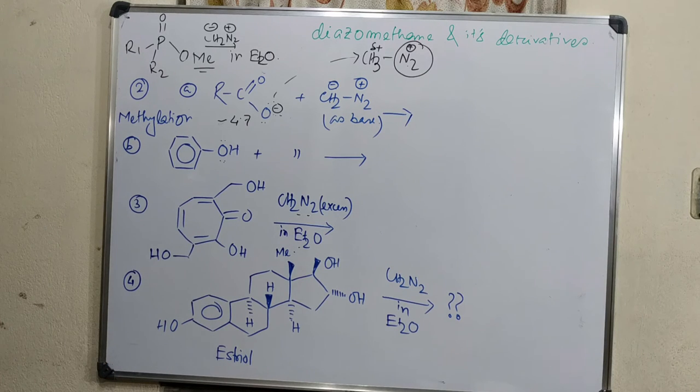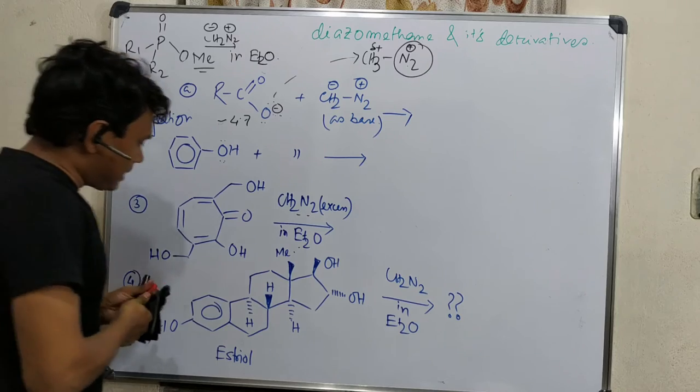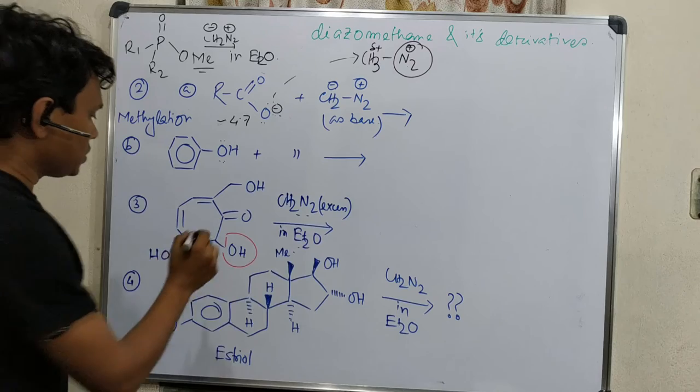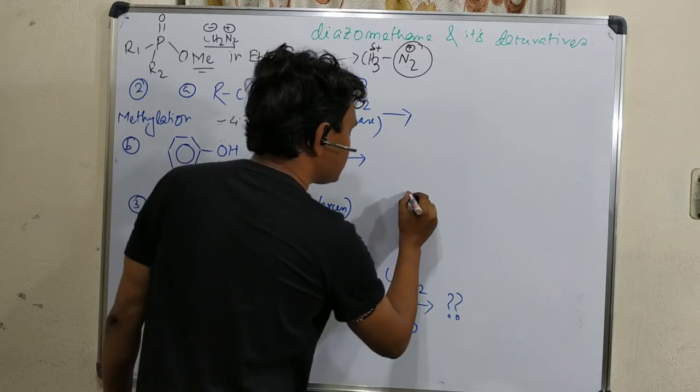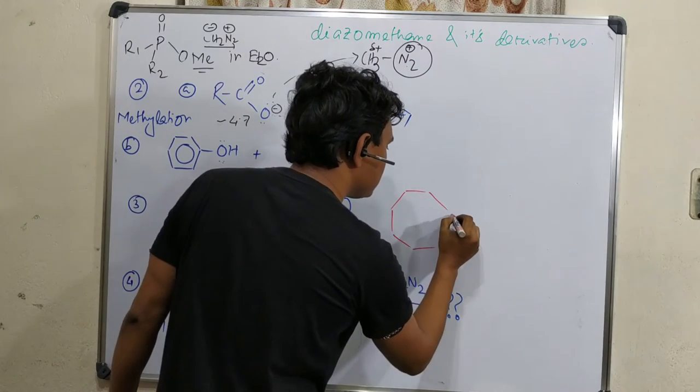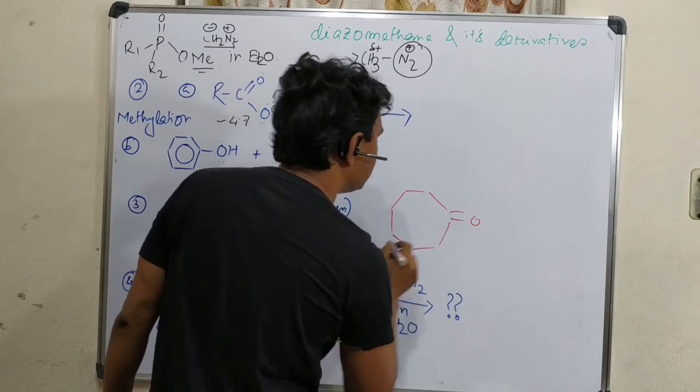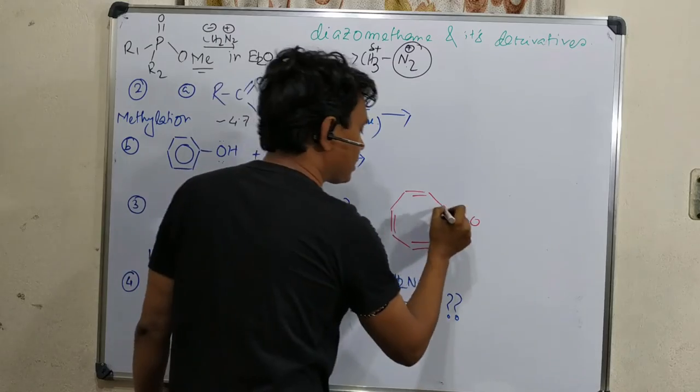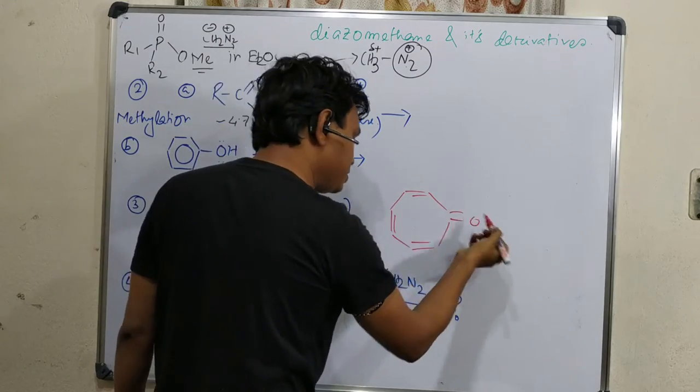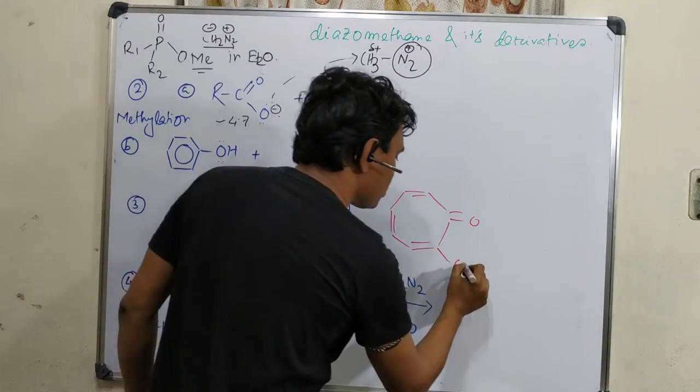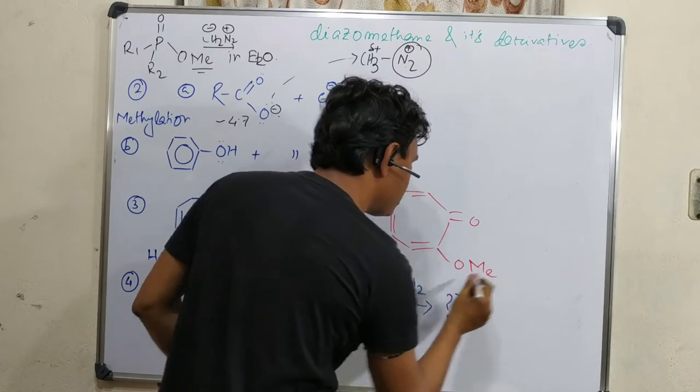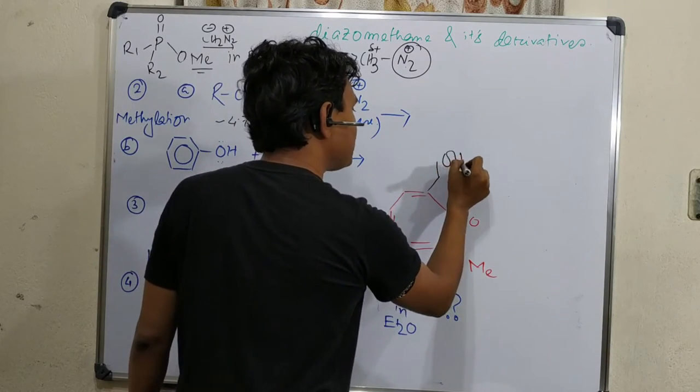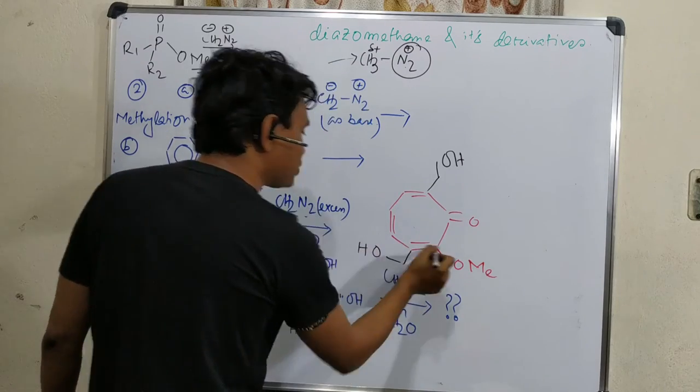Here you can see that this is a phenolic OH. It is acidic enough to react with diazomethane, so this OH will react. The product will be this cycloheptatrienone with O-CH3. This OH will be converted to O-CH3, but rest of all other OH will be similar because they are not phenolic or actually they are not attached to the benzene nucleus, so not that much acidic enough.